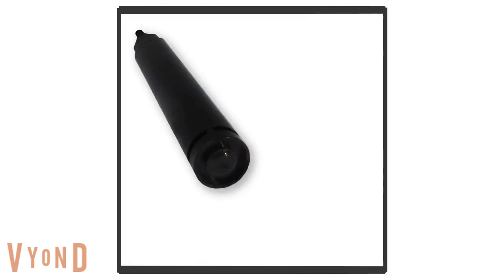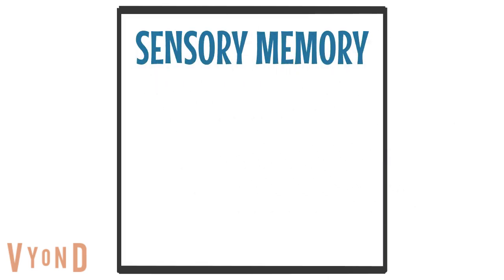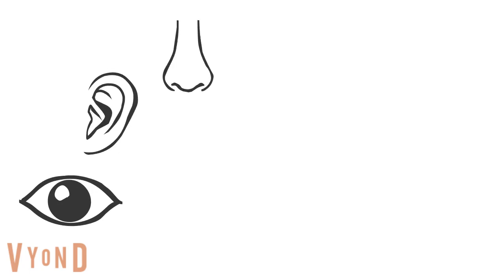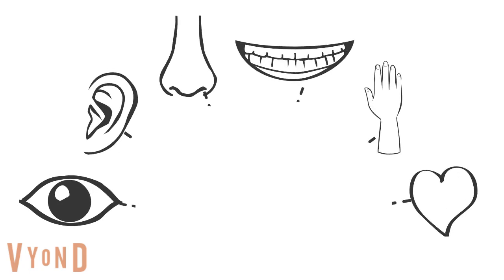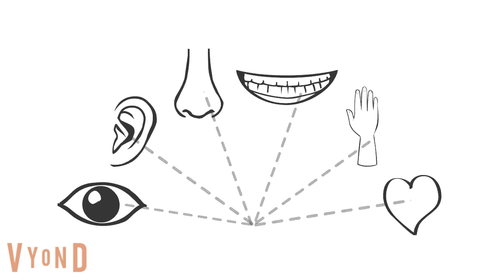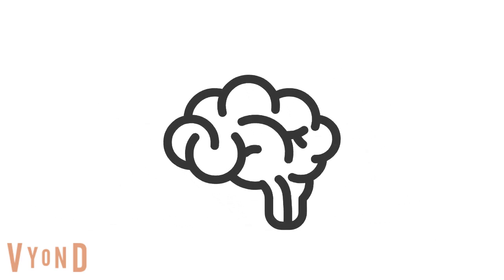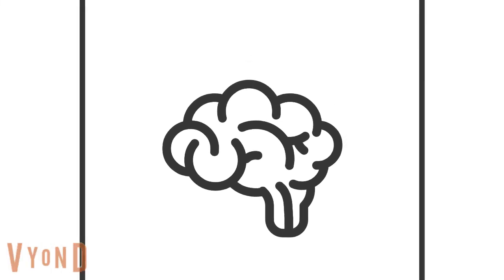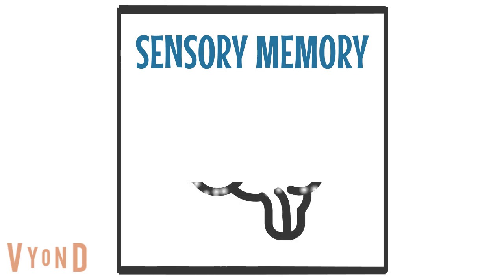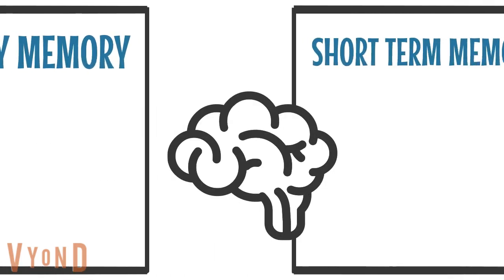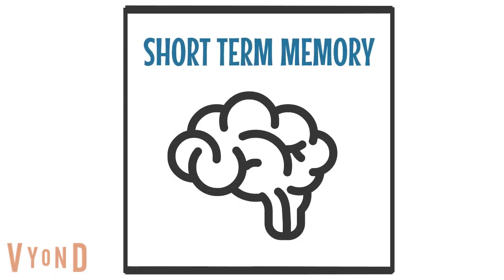All memories start off with our sensory system. We use each of our senses to remember what we see, hear, smell, taste and touch, and how we feel. These are all interconnected, so we can take all these pieces and combine them into one memory. Sensory memory only lasts for about half a second, so the memory either decays or moves to the next type of memory, which is short-term memory.